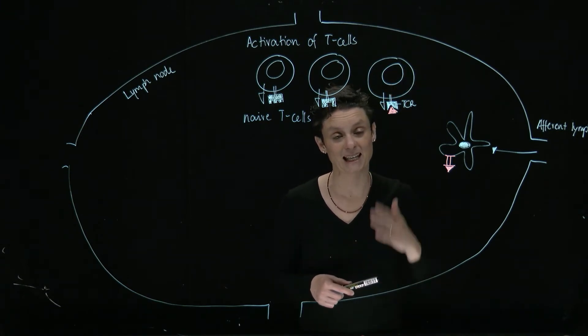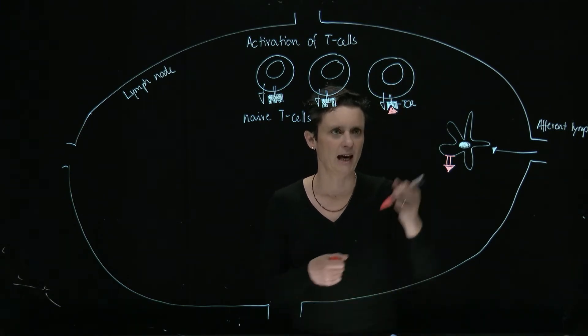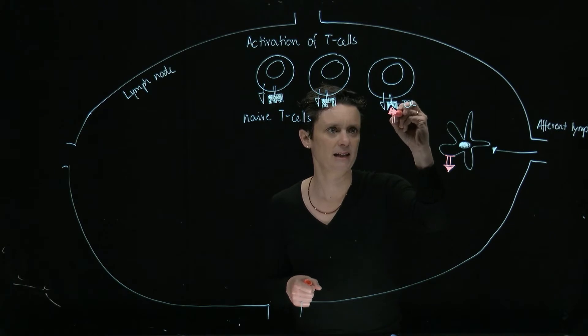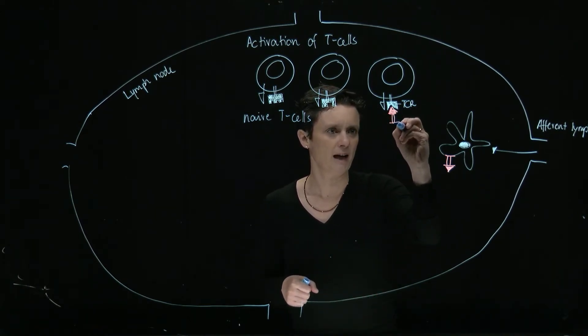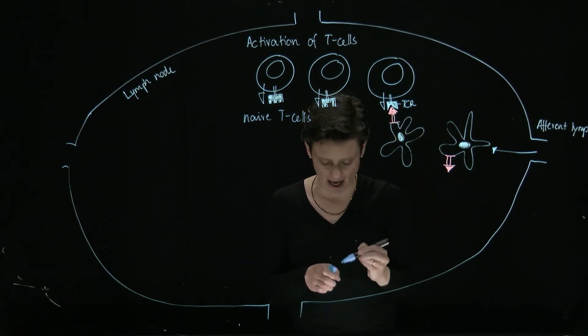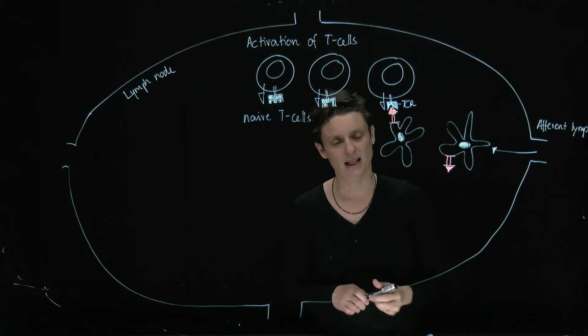So CD4 T cells, naive, are going to sit here and wait. And so let's pose this T cell, this is a lucky guy, which will become activated by this dendritic cell that presents here the peptide via MHC class II.